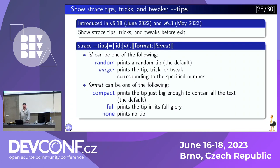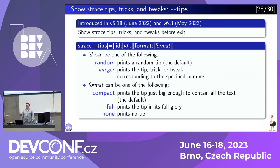The last but not least feature is what is called --tips. It makes strace show you various tips, tricks, and tweaks. It was made initially as an April Fool's joke, but it was too good to be kept just as a joke, so it became an integral part of strace. In the beginning, you had to see some actual trace output before seeing a tip. But now, in the latest release, you can just see the tip without tracing anything. You can specify which particular tips you would like to see, but by default it will show you some random tip. Let's have a look at how one of the funniest tips looks like.